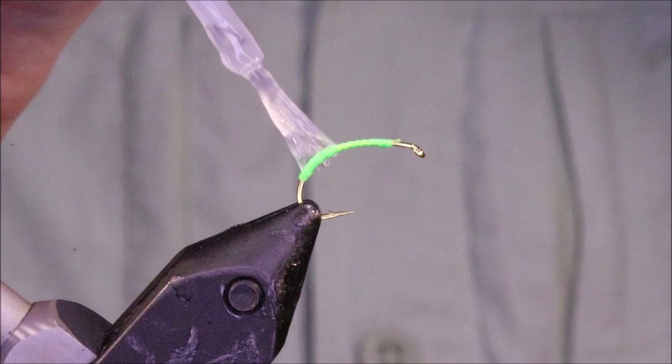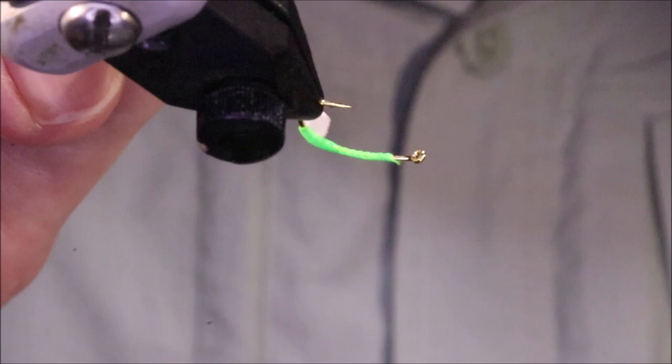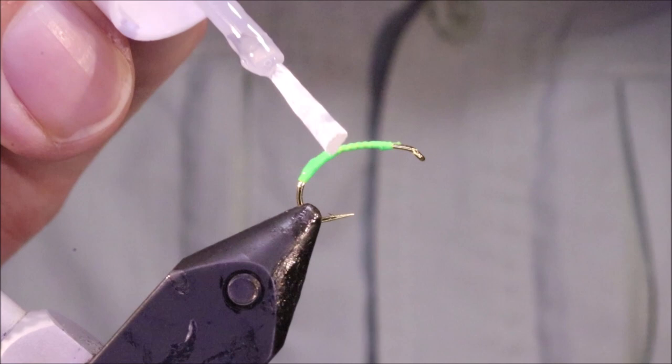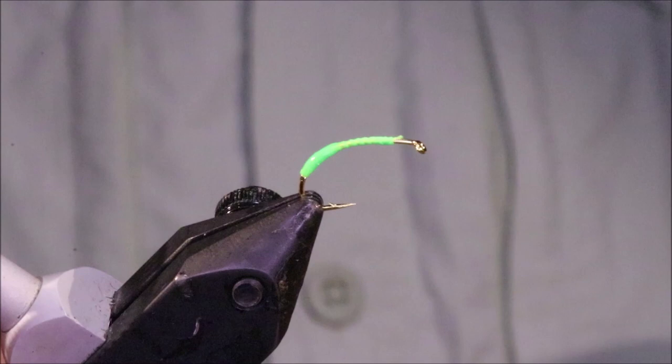Right, I'm going to varnish this. Now I know mullet don't have teeth, but this is really to protect the floss from the sand. If you're in the wash, the sand's very abrasive and it can quite quickly tear up that Glowbrite tag.